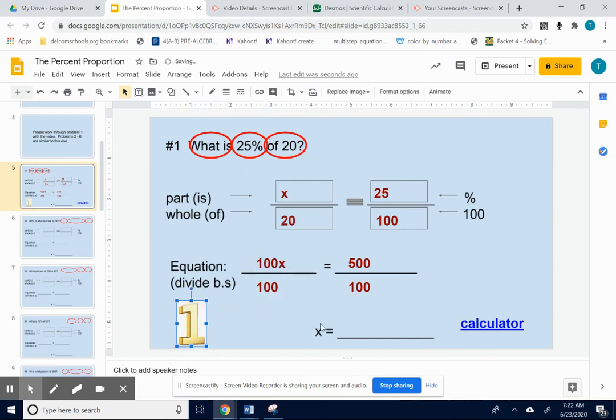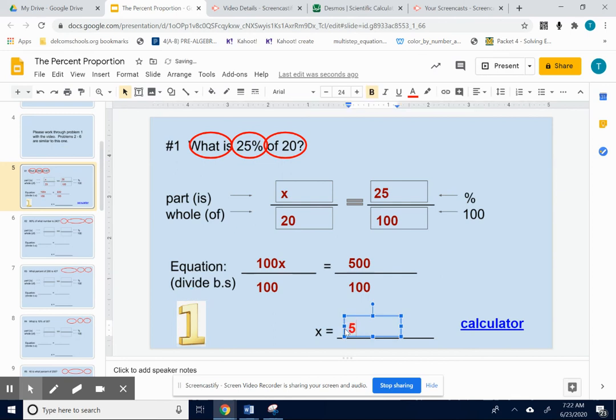So x on the left. 500 divided by 100. I don't really think I need the calculator for that. But you can use that calculator whenever you need. You get 5. So type that in. So that means 5 is 25% of 20.